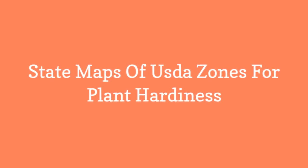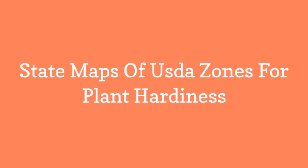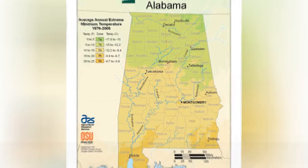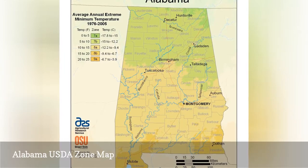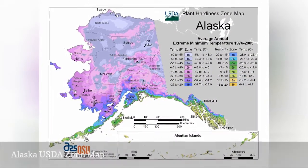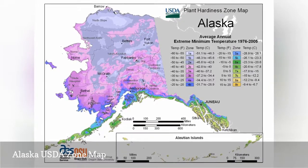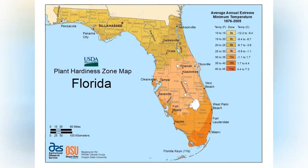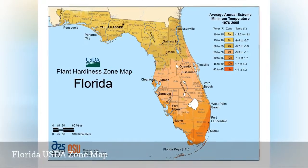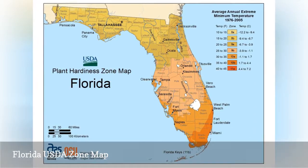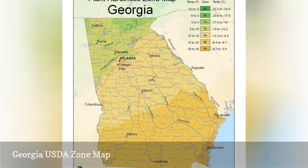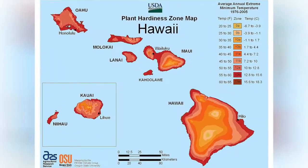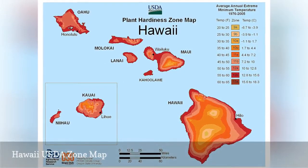State maps of USDA zones for plant hardiness. USDA zones 7A through 9A are represented in Alabama. USDA zones 1A through 8B are represented in Alaska. USDA zones 8A through 11A are represented in Florida. USDA zones 6A through 9A are represented in Georgia. USDA zones 9A through 13A are represented in Hawaii.